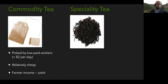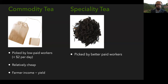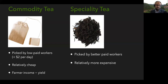Specialty tea, on the other hand, is often loose leaf and single origin. This is a Phoenix oolong from a tea garden in LA — I know exactly where this tea comes from. It's generally picked and processed by better-paid workers, and it's more expensive. This particular tea goes for $90 an ounce, equivalent to about $10 or $15 for a mug brewed western style. Because there's such a big range, farmers have a lot to gain by maximizing quality, even sometimes at the expense of yield. Quality is actually a better predictor of farmer income for specialty tea.